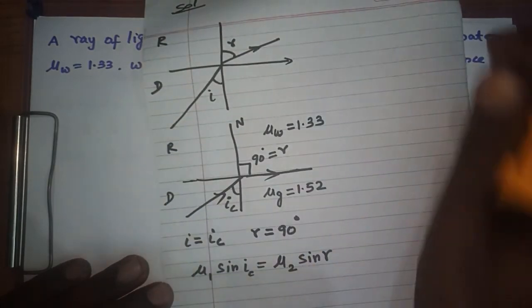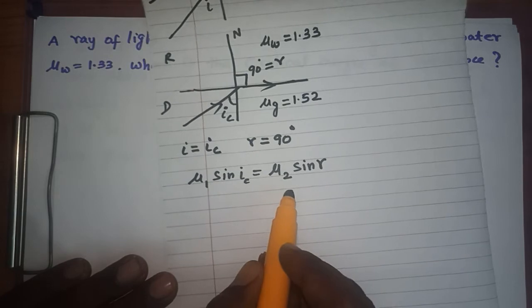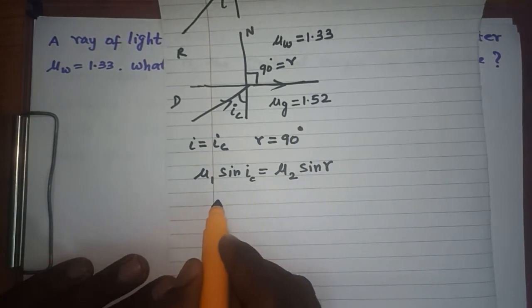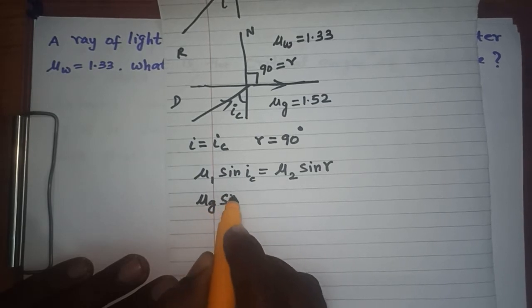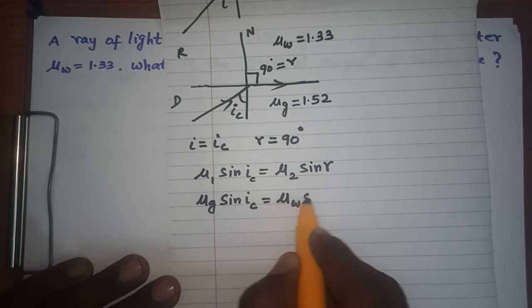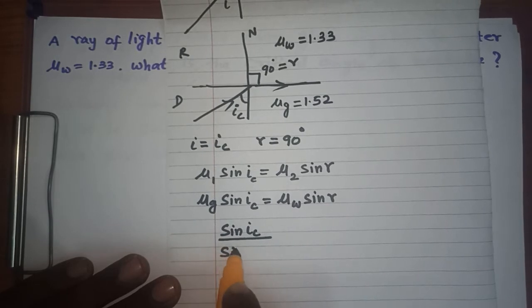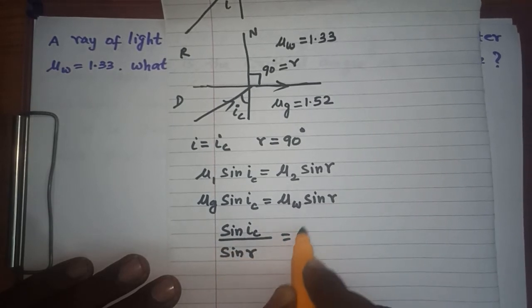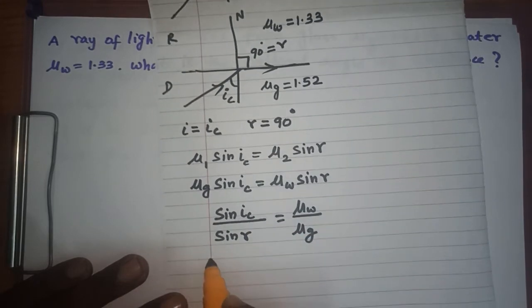Now, the conditions are given here: μ₁ sin i_c = μ₂ sin r. I can write instead of μ₁, that is μ_g sin i_c equals μ_w sin r. This equals μ_w divided by μ_g.